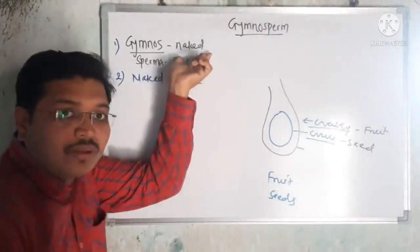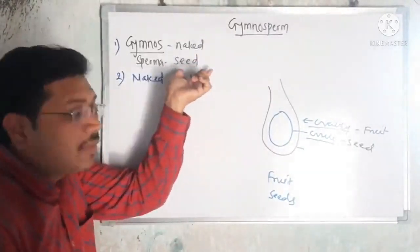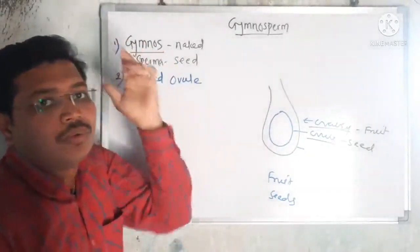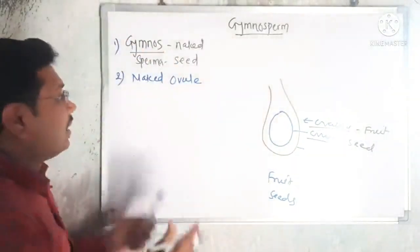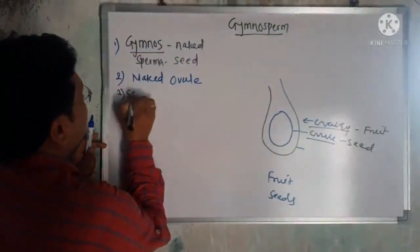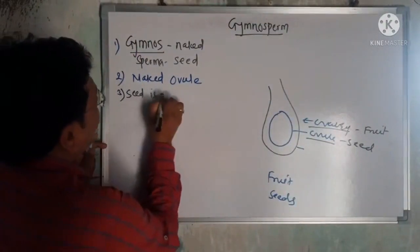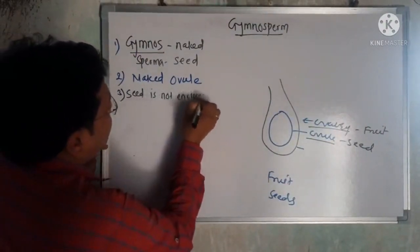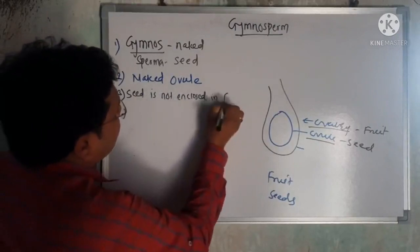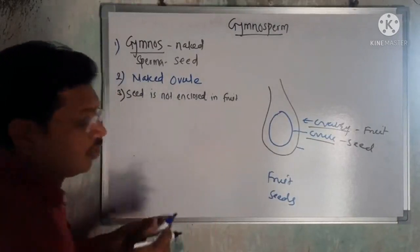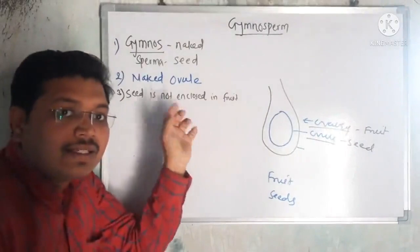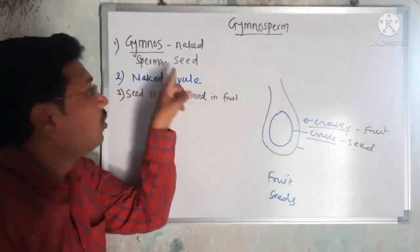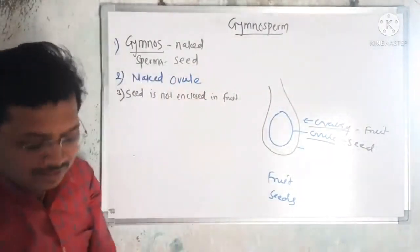So gymnos means naked, sperma means seed — naked seed or naked ovule. In angiosperms, the seed is enclosed in the fruit, but here in gymnosperms the seed is not enclosed in a fruit. This is why we say naked ovule or naked seeds — this is one characteristic of gymnosperms.